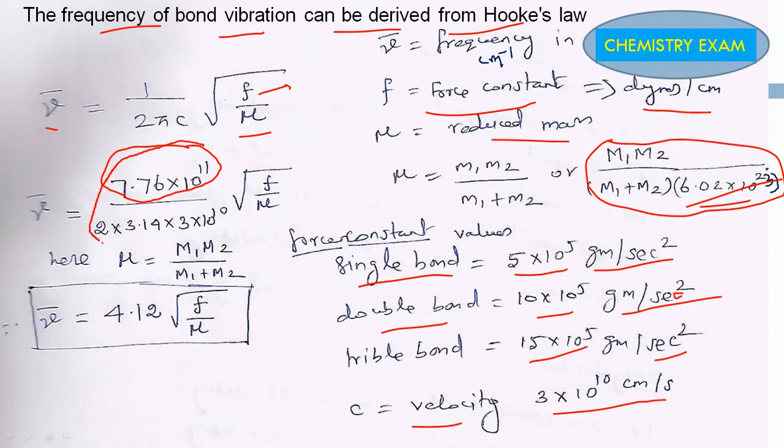We can further simplify these values. What we will get is 4.12 times the square root of F/μ. So this formula we can use for the wave number of any functional groups.